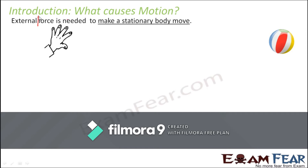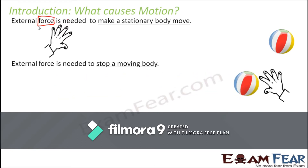Force is something which causes an object to move. Not only to move — it can even stop a moving object. For example, if a ball is already rolling and you want it to stop, some force must be applied on the ball. You might say that a rolling ball stops on its own after some time. That's because a force called friction is applied on the ball, which stops its motion. So if we want a stationary body to move or a moving body to stop, we need to apply an external force, and that is what we are going to discuss in this lesson.